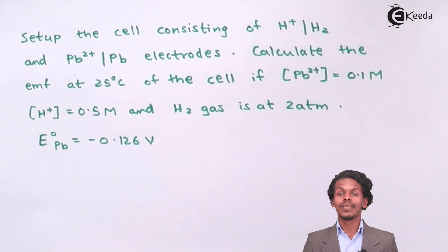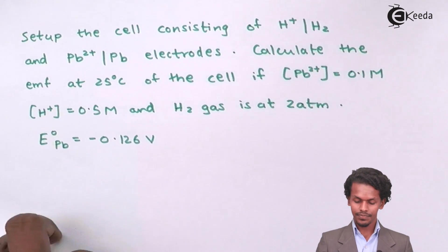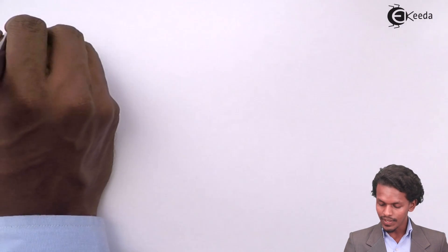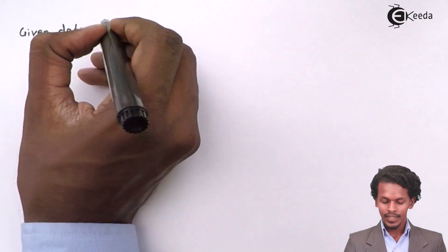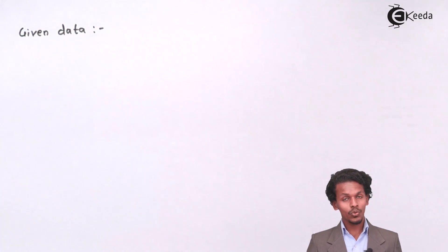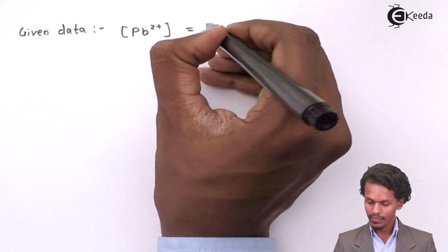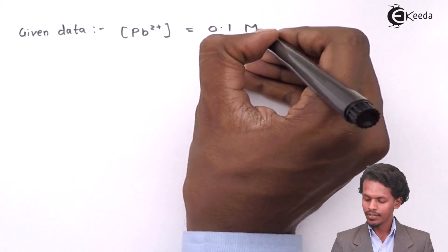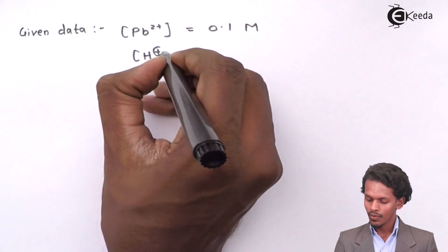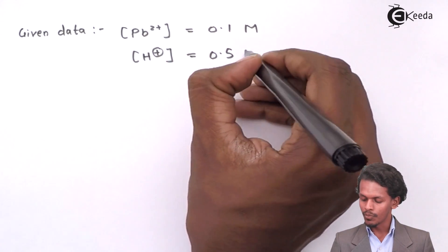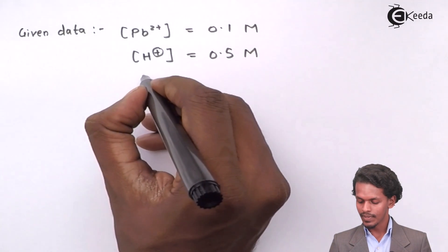So let us do it very carefully. The given data is where the concentration of Pb2 plus was given as 0.1 molar, while the concentration of H plus was given as 0.5 molar.